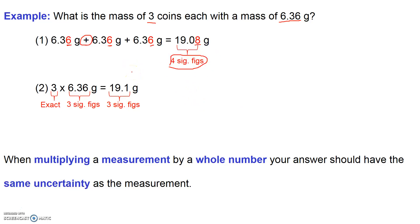However, if I was to consider it as a multiplication problem, I would say, well, here's my 3, that's exact, so therefore it has infinite sig figs. Here's my measurement, and that has 1, 2, 3 significant figures. So when I multiply those two numbers together, my answer should have 3 significant figures.